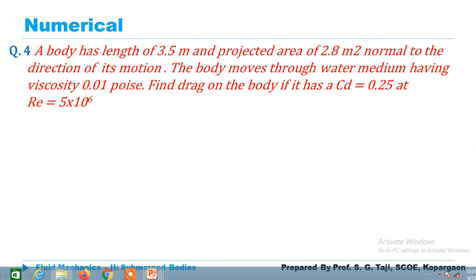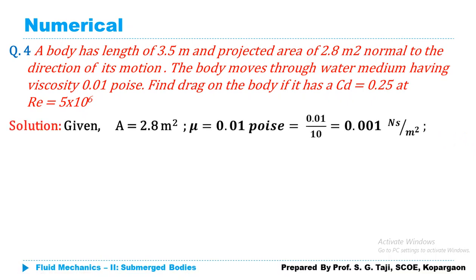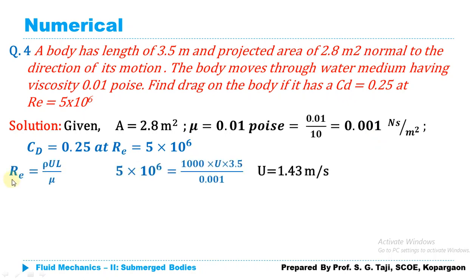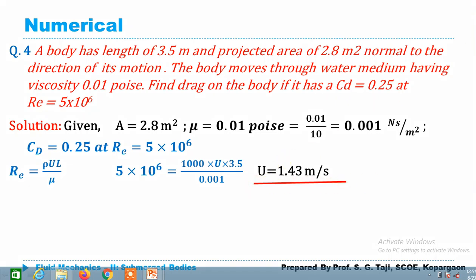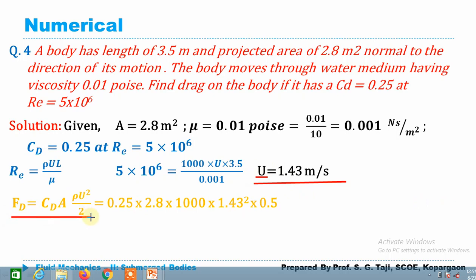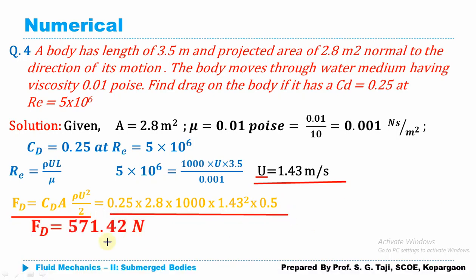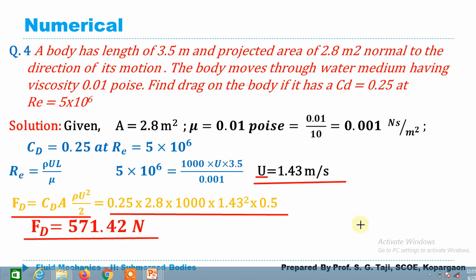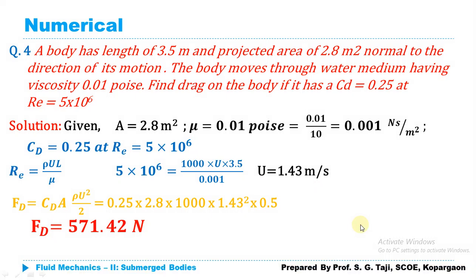Given data: A = 2.8 m², μ = 0.01 poise = 0.001 N·s/m², CD = 0.25 at Re = 5 × 10⁶. Using Re = ρUL/μ, velocity comes out as U = 1.43 m/s. Substituting into FD = CD × A × ρU²/2 gives drag force = 571.42 N.